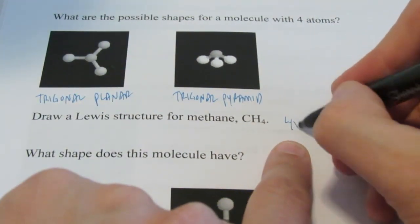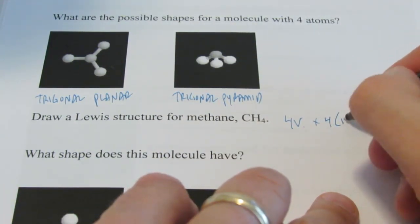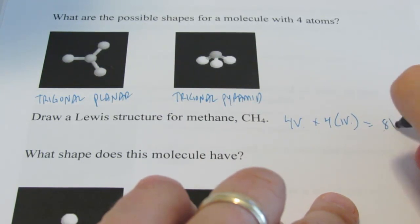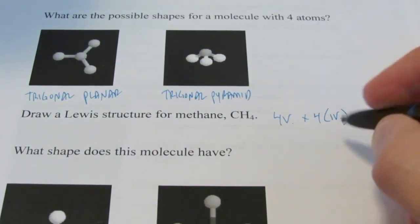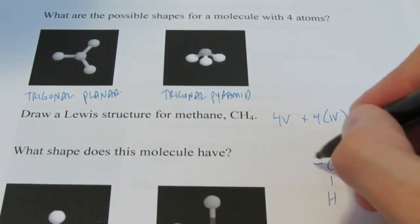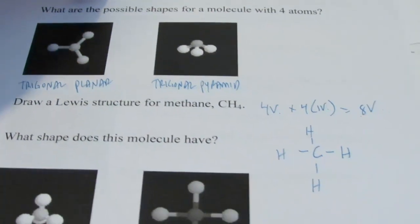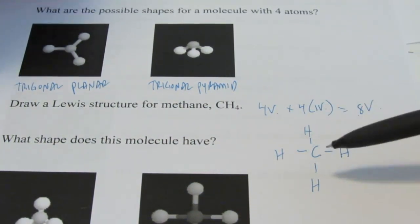Okay, methane's next. Carbon has four valence, and each hydrogen has one valence for a total of eight valence electrons again. So, we'll put carbon in the center, and we will bond the four hydrogens to it. And right away, you think you know the shape. You say, aha, Hummer, that's going to be just a nice planar arrangement.